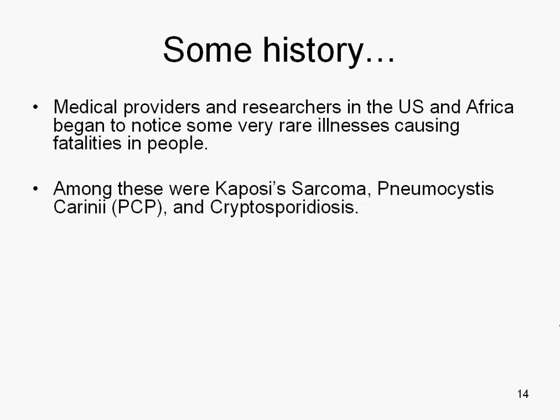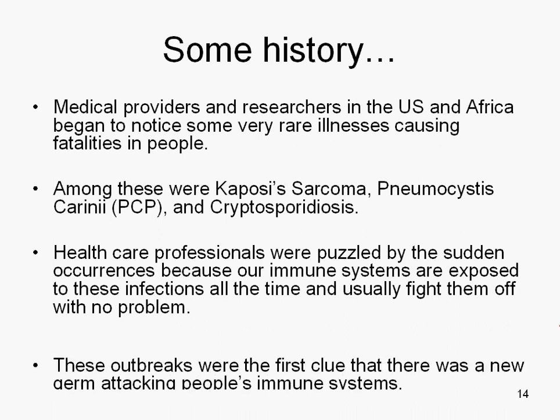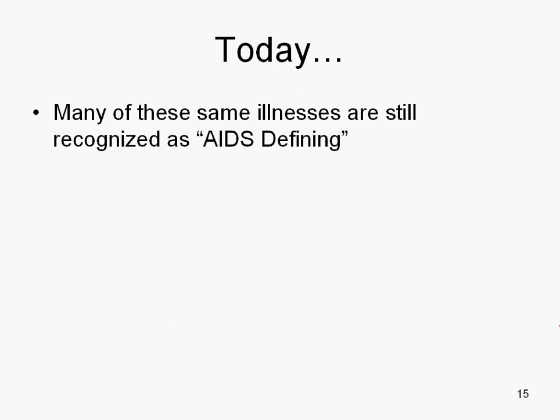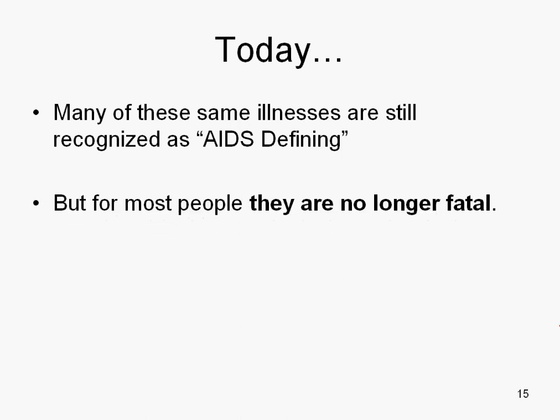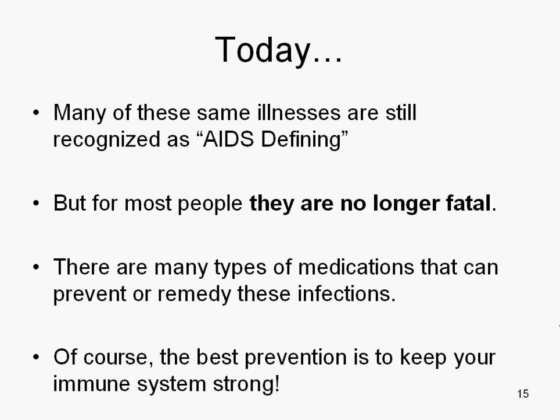These very rare illnesses were causing fatalities — KS, PCP, crypto. The professionals were puzzled by this because our immune systems are exposed to these infections all the time and usually fight them off, particularly as they were not used to seeing young people having these infections. These outbreaks were the first clue that there was a new germ attacking immune systems. Today, many of these same illnesses are still recognized as AIDS-defining, but for most people they're no longer fatal. There are many types of medications that can prevent or remedy these infections.